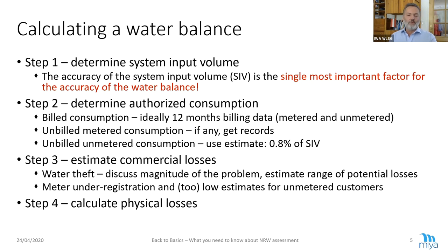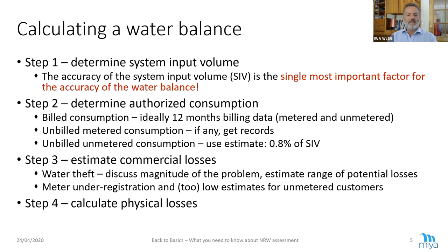Then we need to determine the authorized consumption. We have billed consumption, which is ideally from 12 months of billing data. If you do a water balance for one month, it's a rather difficult job, because you can read the system input meter on the first and last day of the month, but all the customers' meters are read over the year. So you need to analyze the billing data in great detail. If you do it for one year, you don't have a problem with the billing data — it's rather simple.